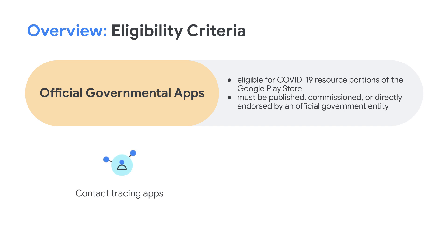First is contact tracing apps, including all apps that track or monitor infected or exposed individuals for the purpose of COVID-19 response or mitigation. Next is COVID-19 status apps, including all apps that verify an individual's vaccination status, current infection, or history of infection for the purpose of determining the individual's eligibility for travel or entry into public spaces. The jurisdiction or applicable geographical region for that endorsement must be declared during the proof-of-permission process and must be prominently disclosed in the app's Play Store listing.